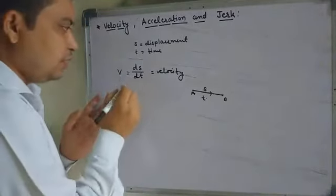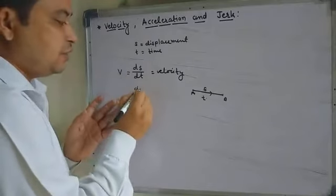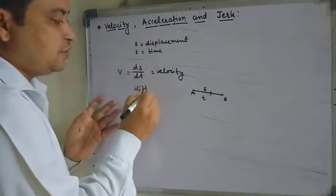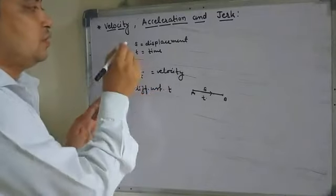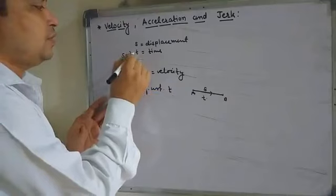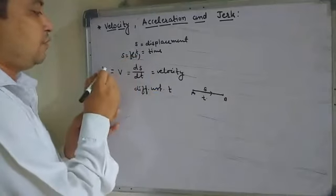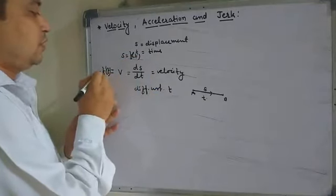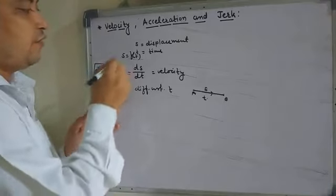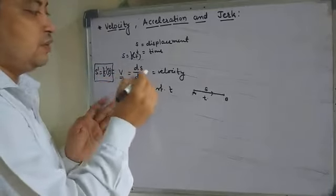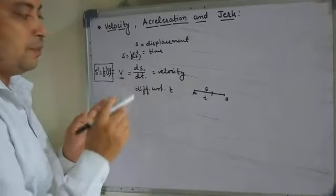When this velocity, or dS/dt, is again differentiated with respect to T — here S is a function of T, that is f(T) — this is nothing but f'(T) or S'. So S' or f'(T) is the velocity, that is the rate of change of displacement with respect to time.